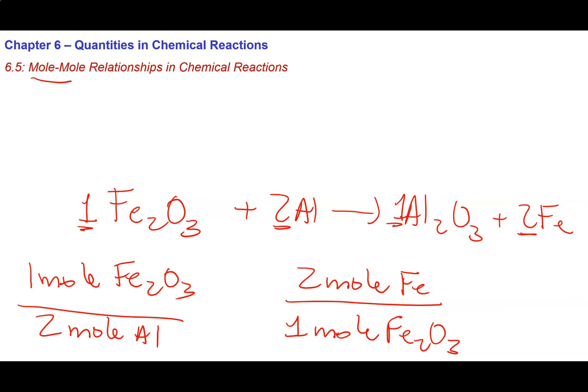So this is how I'm going to establish the relationships between the number of moles of each product and each reactant. So I can write one of these mole ratios for any two things that appear in my balanced chemical equation. And that's the cool thing about a balanced chemical equation.